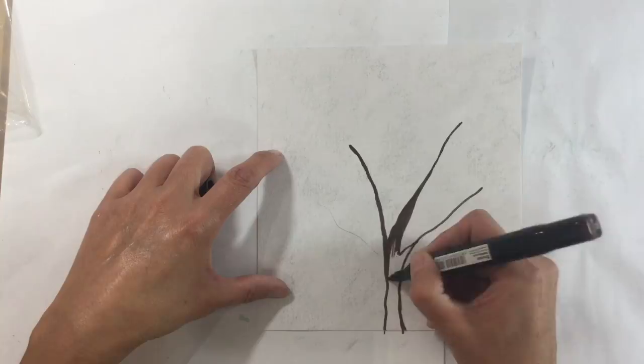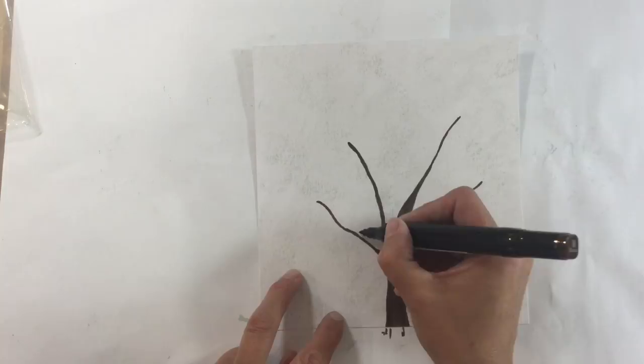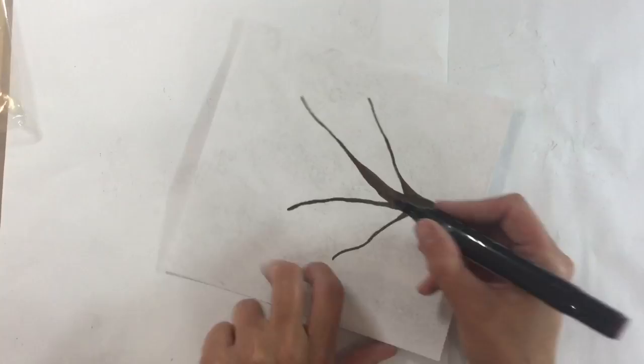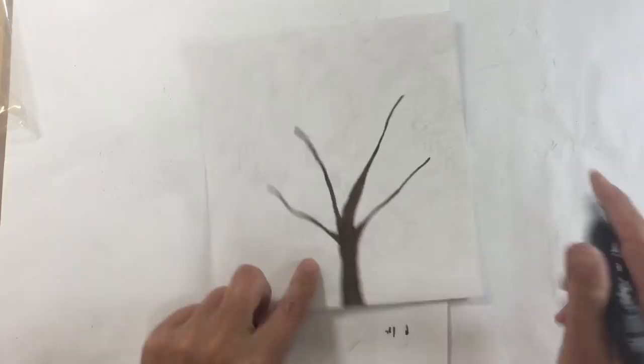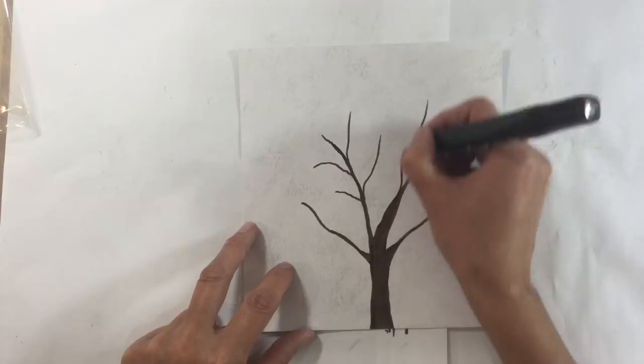And then once I'm happy with how that looks, I just add more details on the branches. Another branch here on the left hand side, filling it out towards the trunk as well. And just playing around with this until I am happy with the overall shape. Adding more branches really loosely here. Nice and easy, nothing complicated.